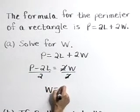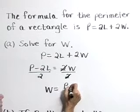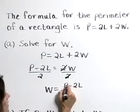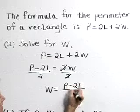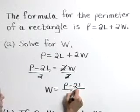I'm going to write that with the W on the left. W is equal to P minus 2L quantity, or that entire expression, over 2.